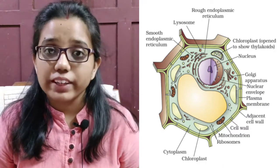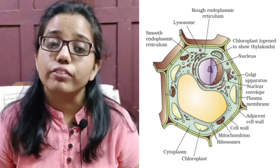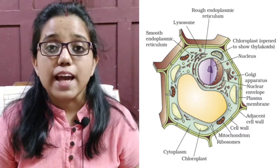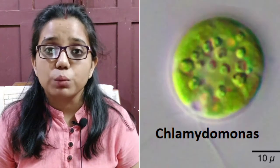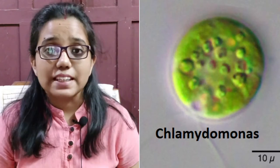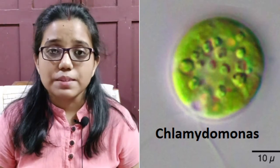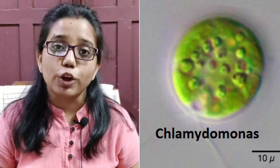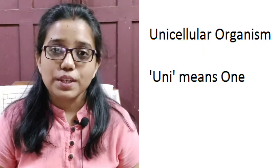Now, the invention of magnifying lenses led to the discovery of the microscopic world such as amoeba, paramecium, chlamydomonas and various bacteria which are made up of single cell. And these organisms which are made up of single cells are called unicellular organisms.